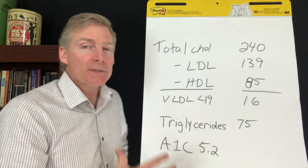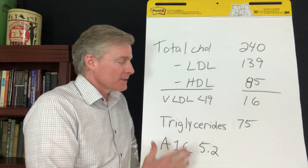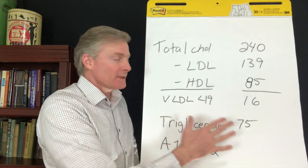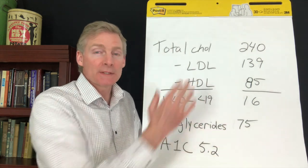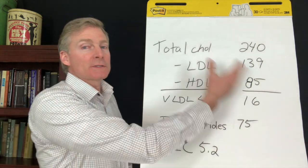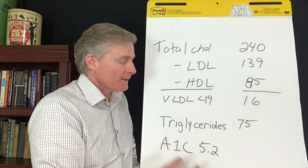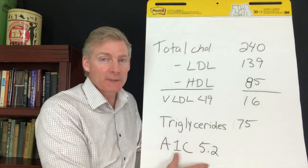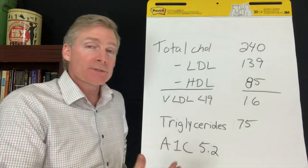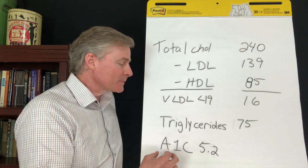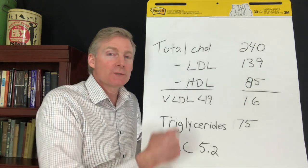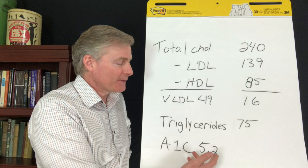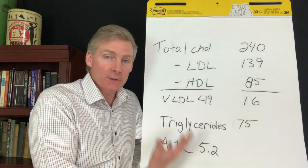But the other numbers have to also make sense. For example, triglycerides. That's 75 in this example. That's a nice low number. I know this person is eating a low-carb diet. And then the A1C is 5.2, long-term measurement of blood glucose. Actually, it measures the destruction of sugar to the arterial wall. And so 5.2 tells me that they're eating a low-carb diet.